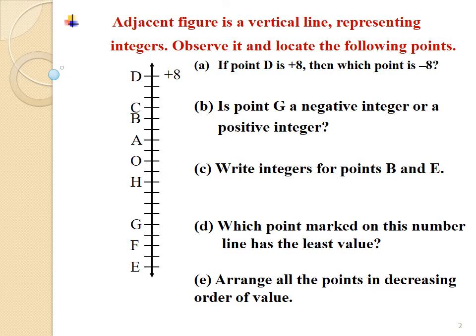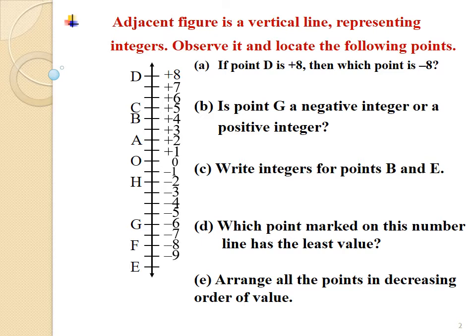By representing the correct integers on the given vertical number line, we write integers starting from 7 below 8: 7, 6, 5, 4, 3, 2, 1, 0, minus 1, minus 2, minus 3, minus 4, minus 5, minus 6, minus 7, minus 8, minus 9, and minus 10.